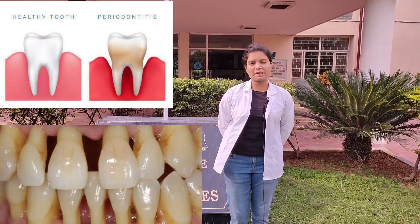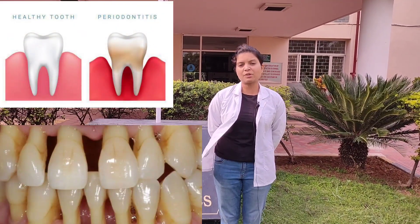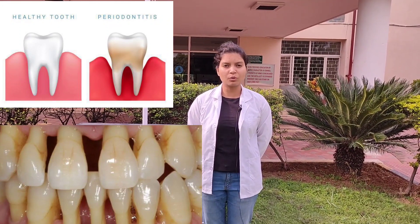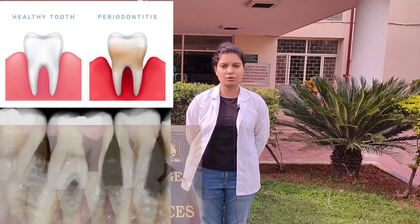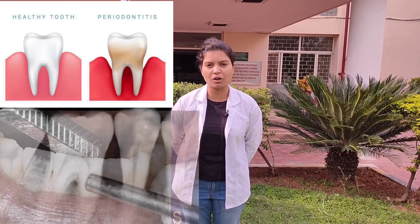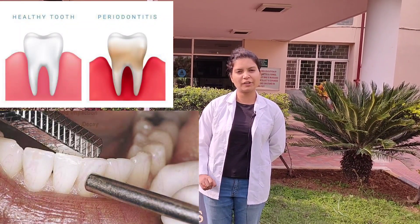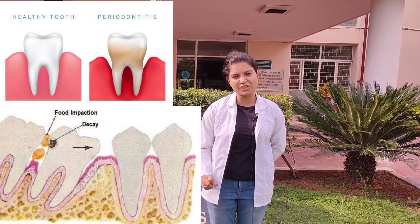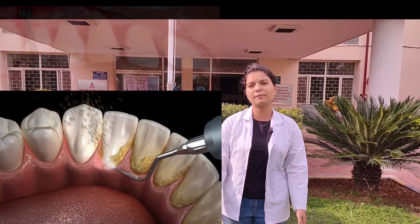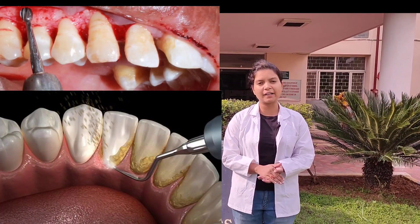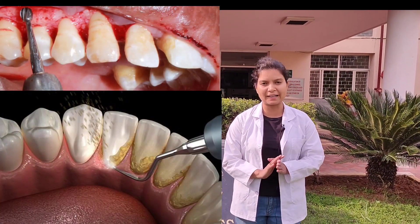Periodontitis is a gum disease that causes damage to the soft tissue and the supporting bone which surrounds the tooth and makes it firm in the jaw. It is characterized by mobility of your teeth, food impaction, and a vague constant or intermittent kind of pain.